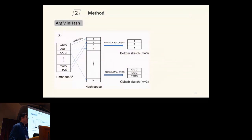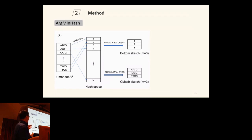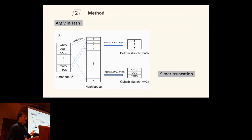The first key part is argmin hash. In the classic MinHash algorithm, people store hash values because numbers are easier to store than long k-mer strings. For example, given a k-mer set of 4-mers, we apply a hash projection and store the three smallest hash values as a bottom sketch — so the bottom sketch is the three smallest hash values. In SMASH, we do not store hash values; instead, we store the k-mer elements themselves — the three 4-mers corresponding to the smallest hash values.